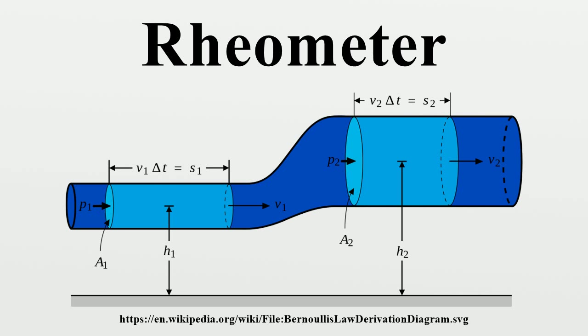The word rheometer comes from the Greek and means a device for measuring flow. In the 19th century it was commonly used for devices to measure electric current, until the word was supplanted by galvanometer and ammeter.